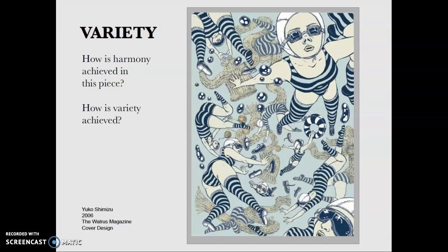This is an illustration by Yuko Shimizu. She is a Japanese illustrator. She lives in New York and she's been pretty successful commercially. This is her cover design for the walrus magazine. Here we have variety in shape. And we also have a lot of harmony. So I'm going to ask you in the discussion comments what about this piece is harmonious? And what about this piece uses variety?